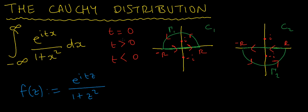This integral has to be approached differently depending on the value of t. When t equals 0 this obviously becomes 1 divided by 1 plus x squared, which is just arctan. But when t is greater than 0 or less than 0, I'm going to use two different contours. I'm going to define f(z) to be e to the itz over 1 plus z squared, just replacing the x's with z's.